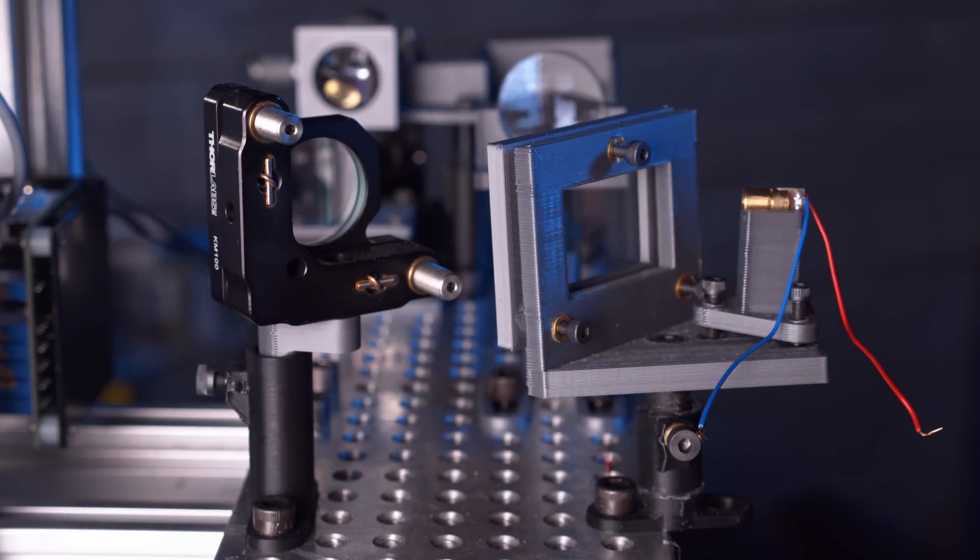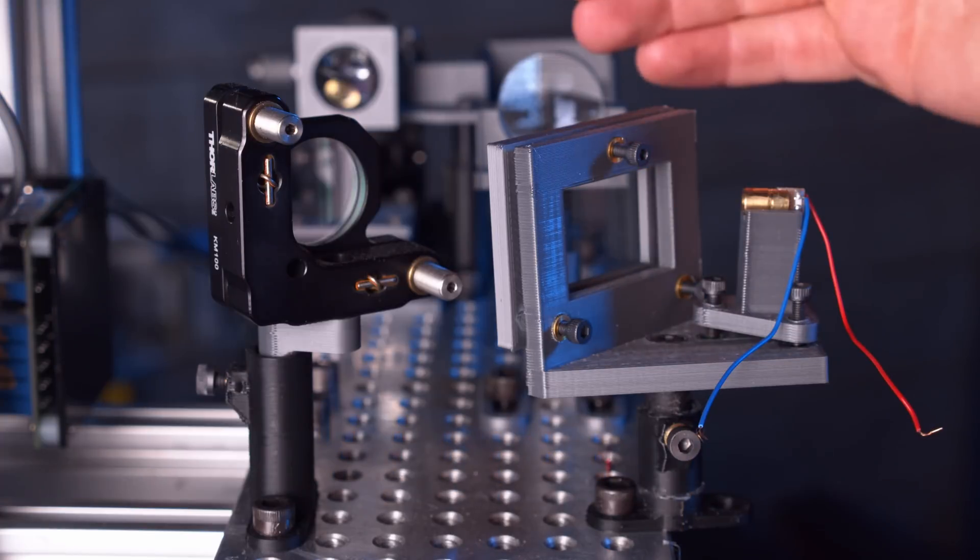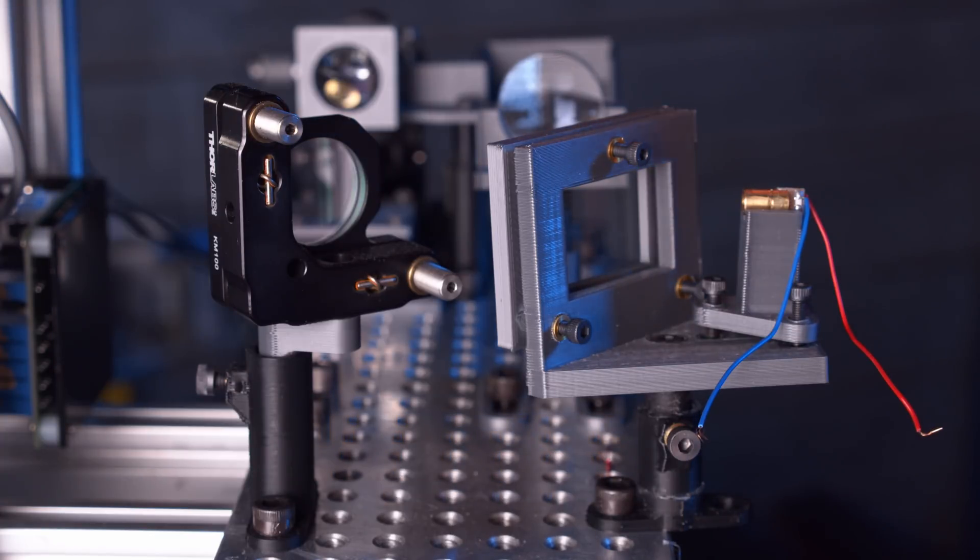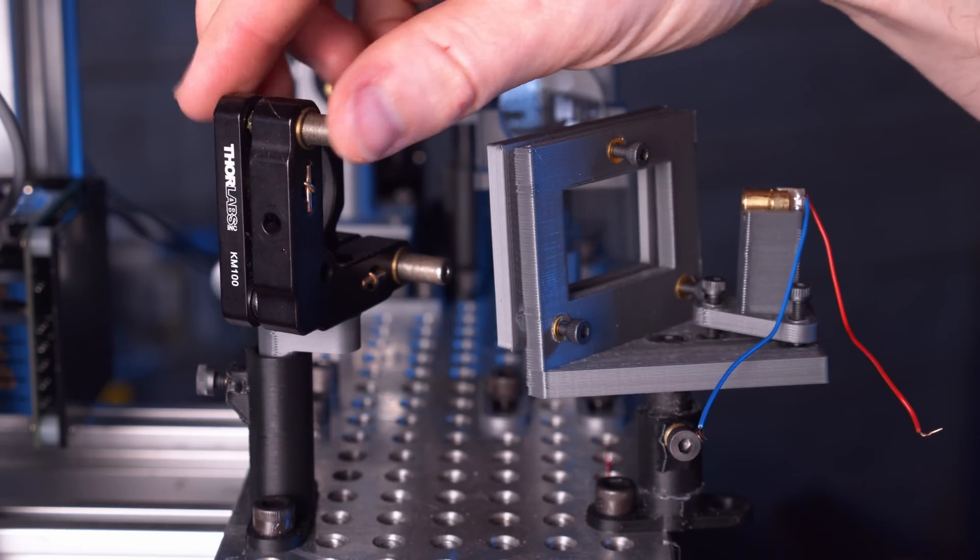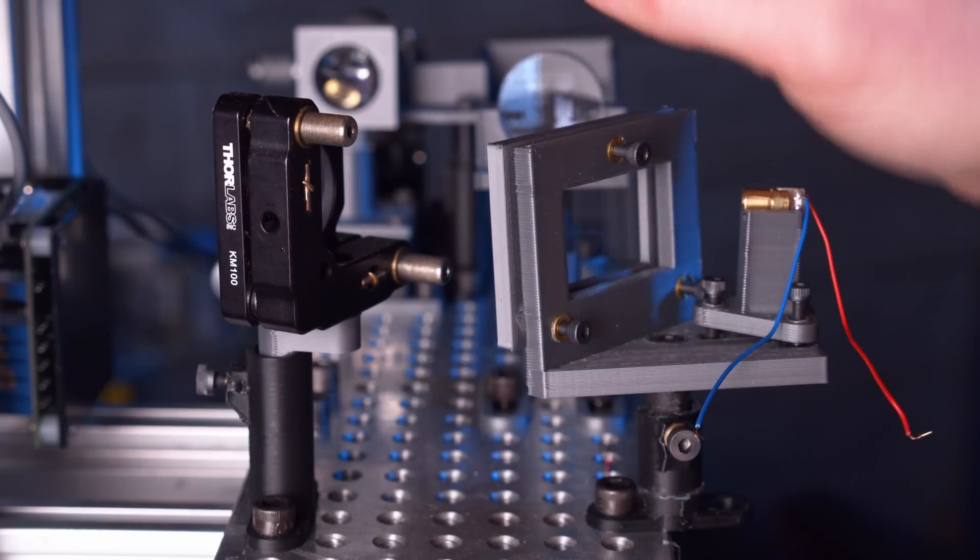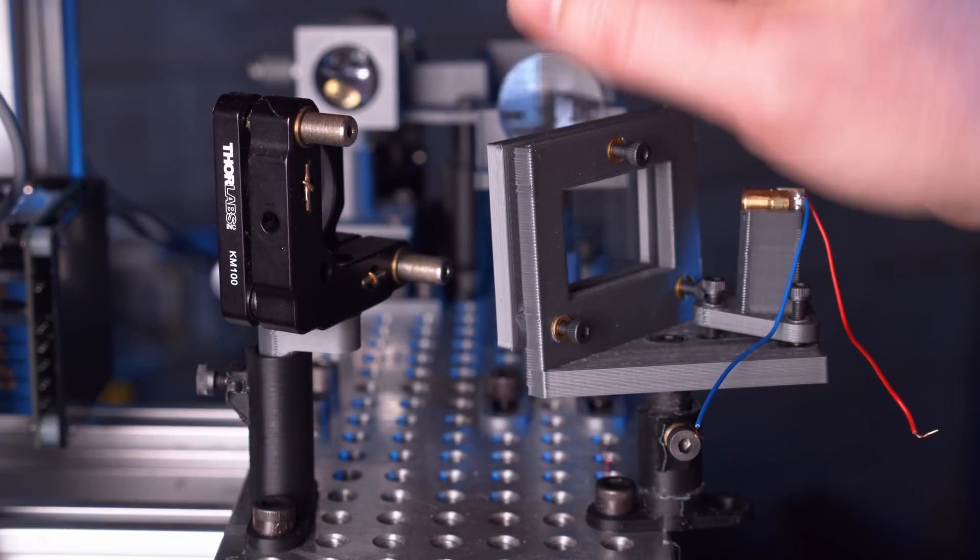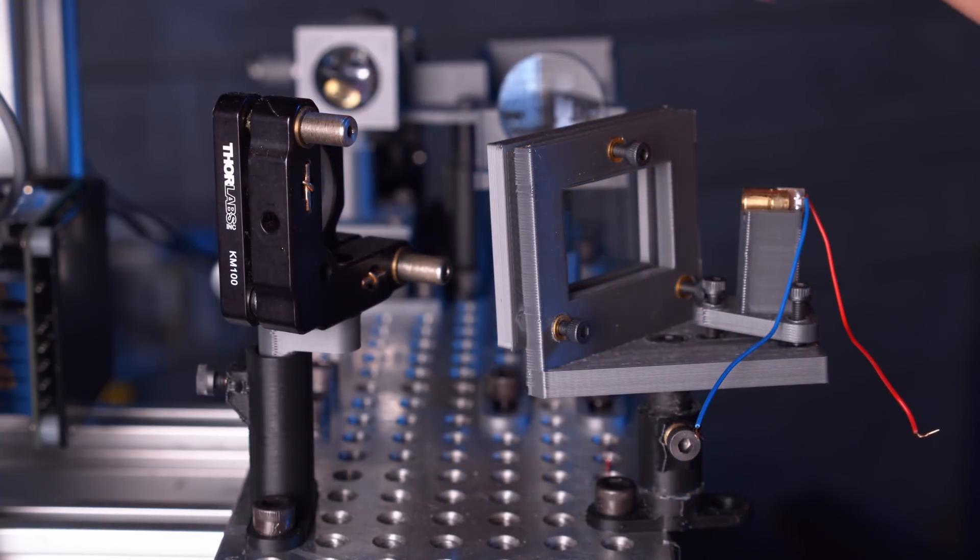And the point of these kinematic mounts is to provide tip and tilt so that you can align your mirrors correctly. And it's done by changing these adjustment screws. You can see they're very finely threaded, so each turn of the screw moves the mirror just a little bit in tip or tilt.